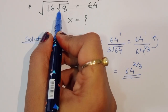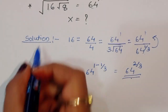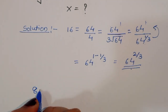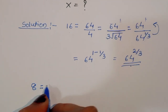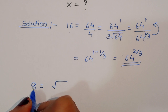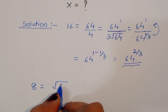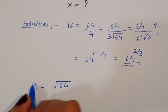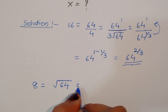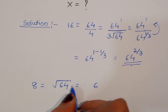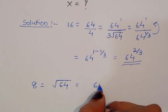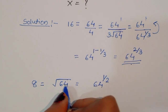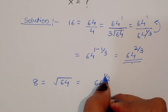The next term is 8. We can write 8 in terms of 64: the square root of 64 is equal to 8. Taking this in power form, √64 = 64^(1/2), so 8 = 64^(1/2).